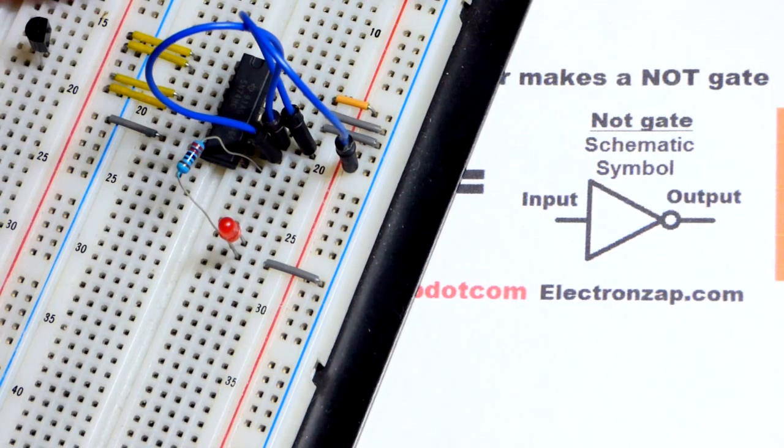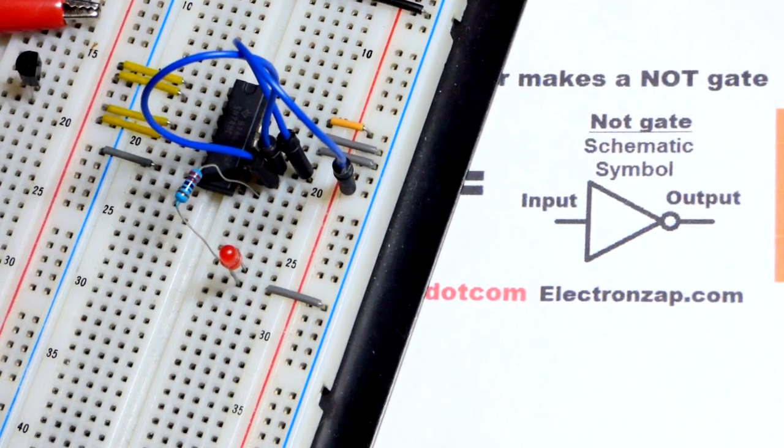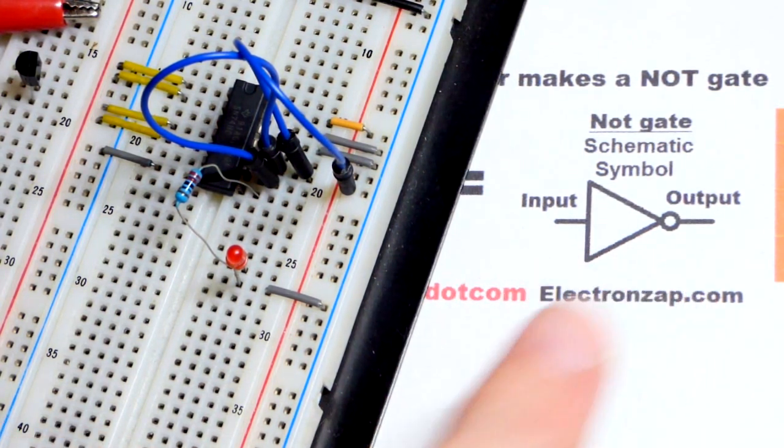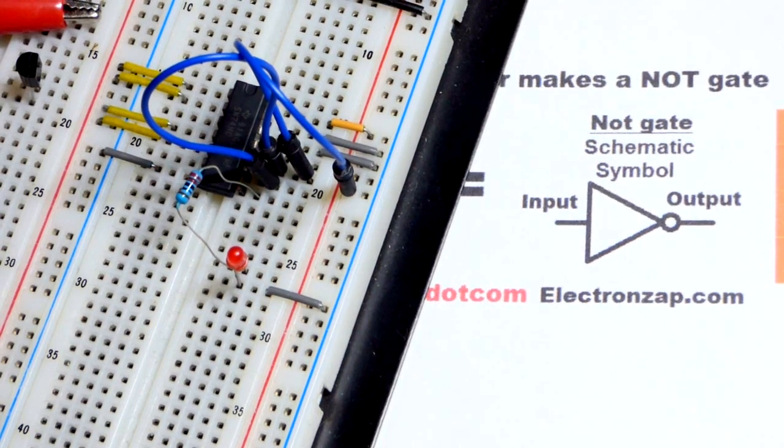So we gave a low input, had a high output. Now we have a high input and a low output. We have a NOT gate. So the NAND gate, if you have enough of them, can make any other gate. But the simplest is the NOT gate. We looked at that one in this video.